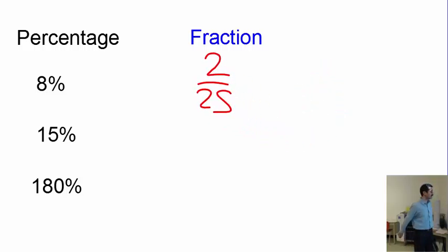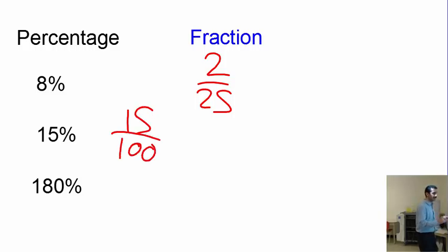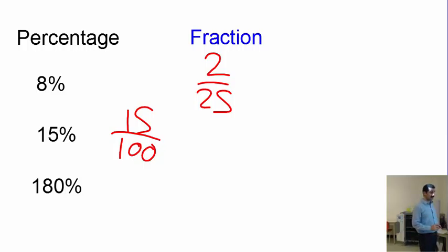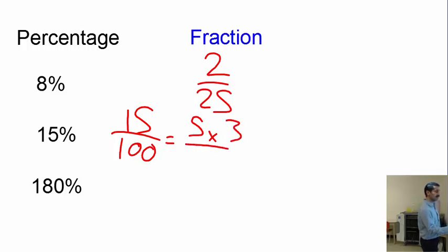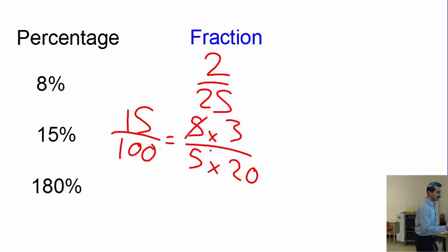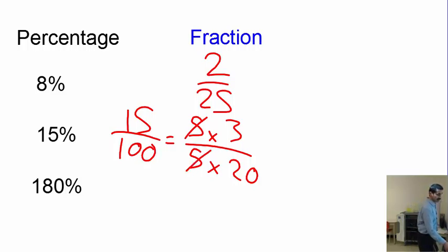Next: 15%. Write it as 15 over 100, then simplify. Both are divisible by 5: 5 times 3 is 15, and 5 times 20 is 100. Cancel both and you end up with 3 over 20.